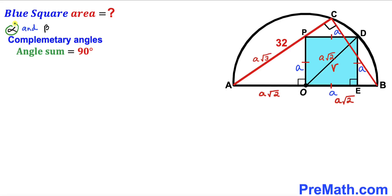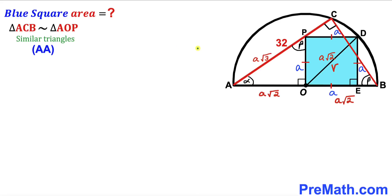Let's assume alpha and beta are two complementary angles, so alpha + beta = 90 degrees. In triangle POA, if one angle is alpha and another is 90 degrees, then the remaining angle must be beta. Similarly, in the larger right triangle ABC, if one angle is alpha and another is 90 degrees, the remaining angle is beta. Therefore, right triangle ACB and right triangle AOP are similar triangles by the Angle-Angle similarity theorem.